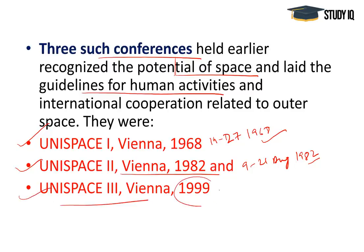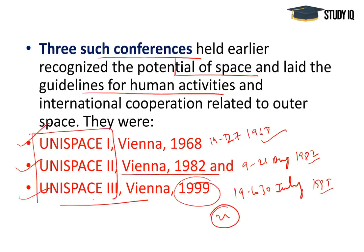UNISPACE III was held in 1999, from 19th to 30th July 1999. UNISPACE III created a blueprint for the peaceful uses of outer space in the 21st century. The significance of the UNISPACE program is to ensure outer space is used for peaceful exploration and not for arms development.